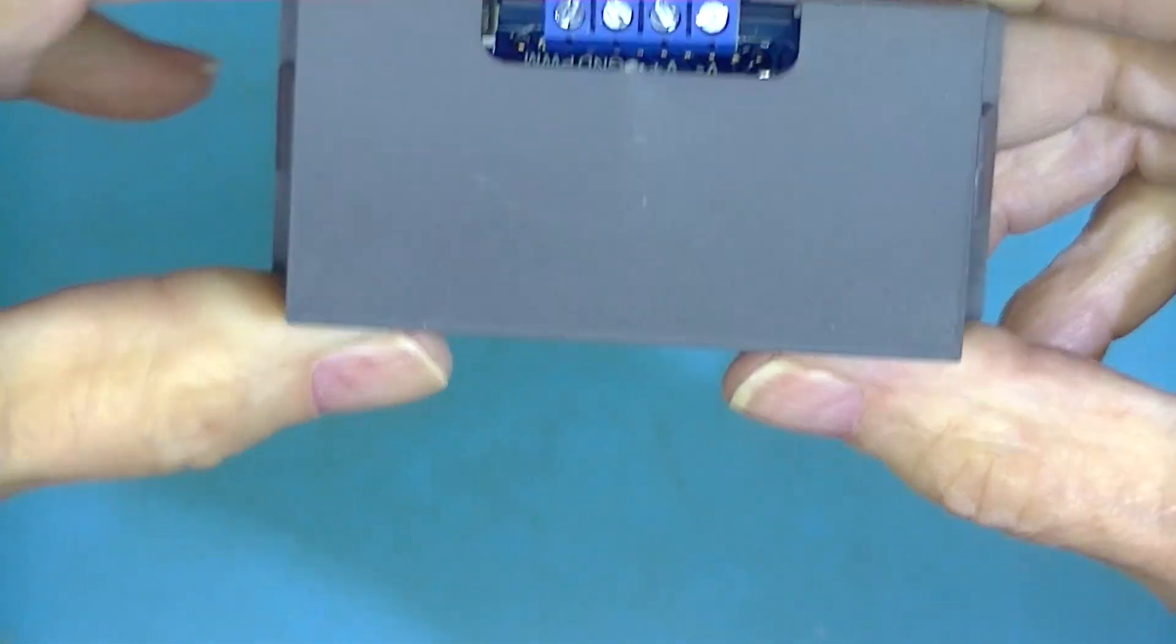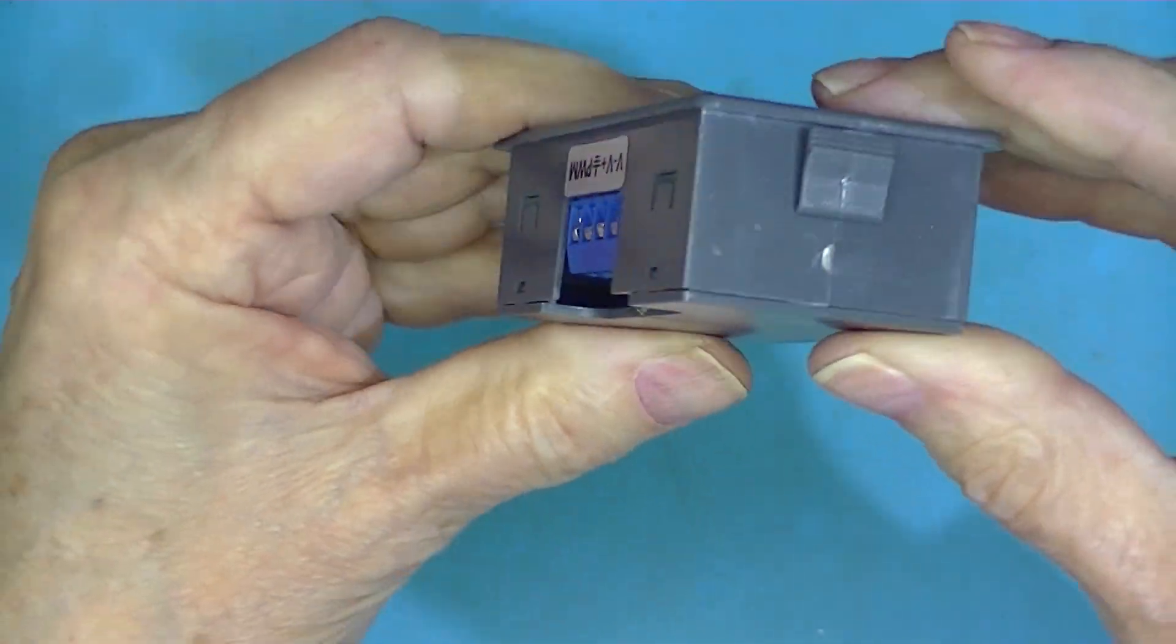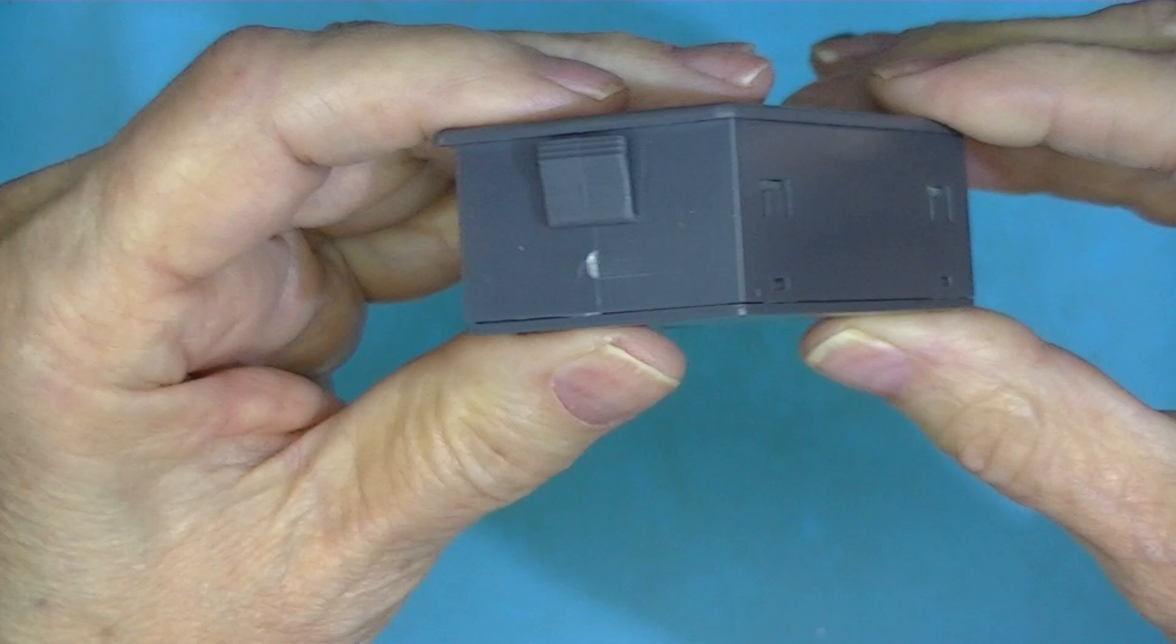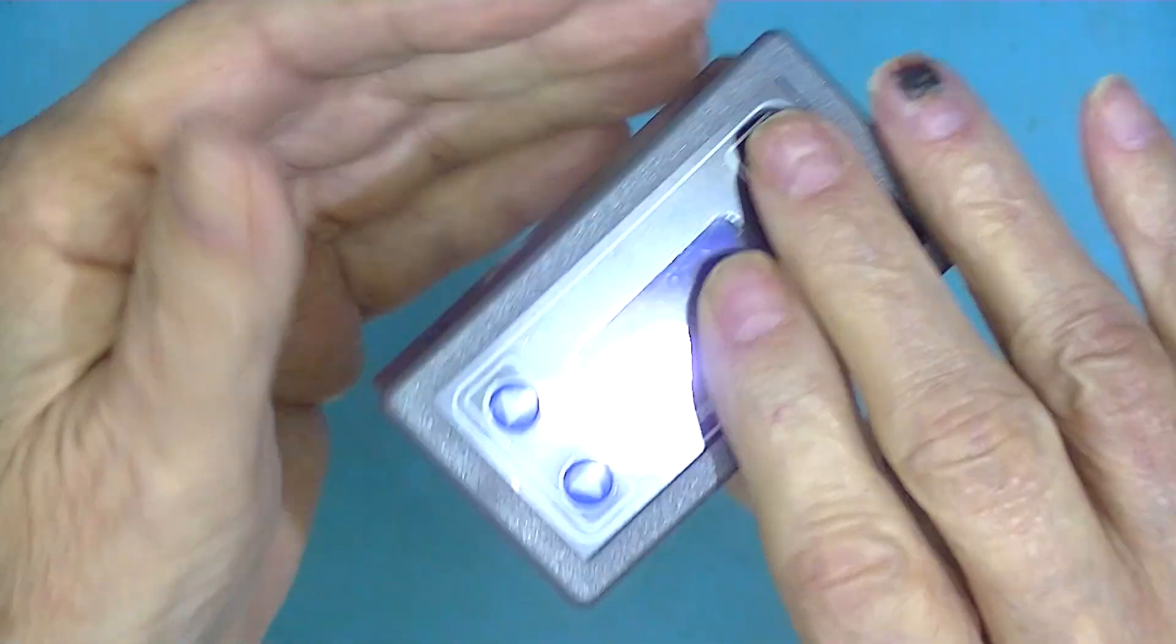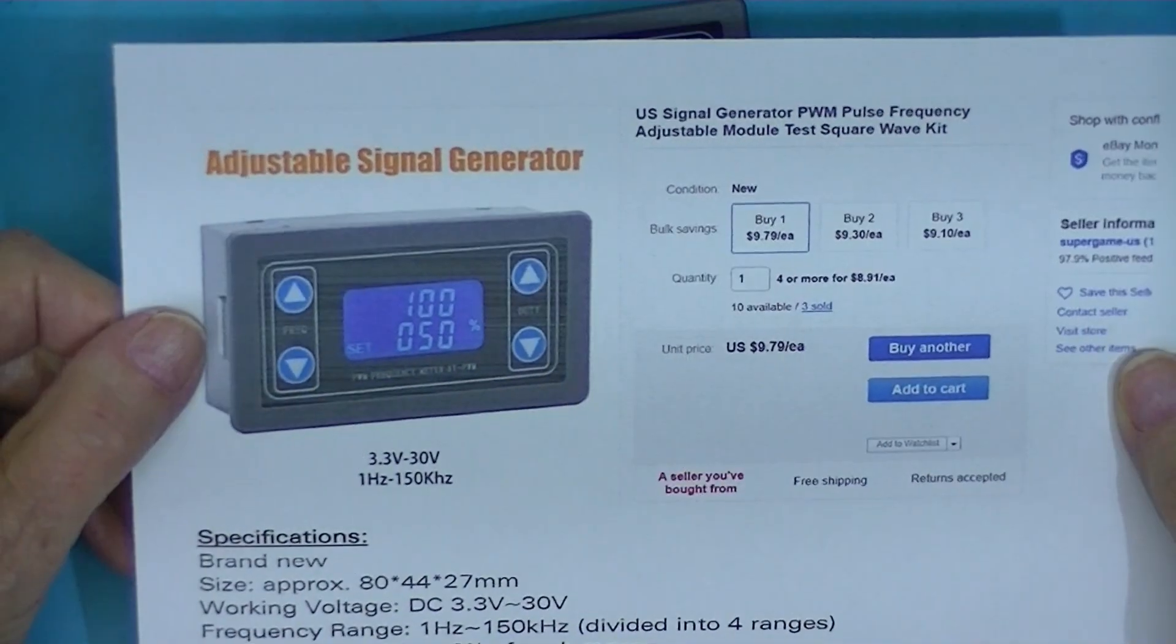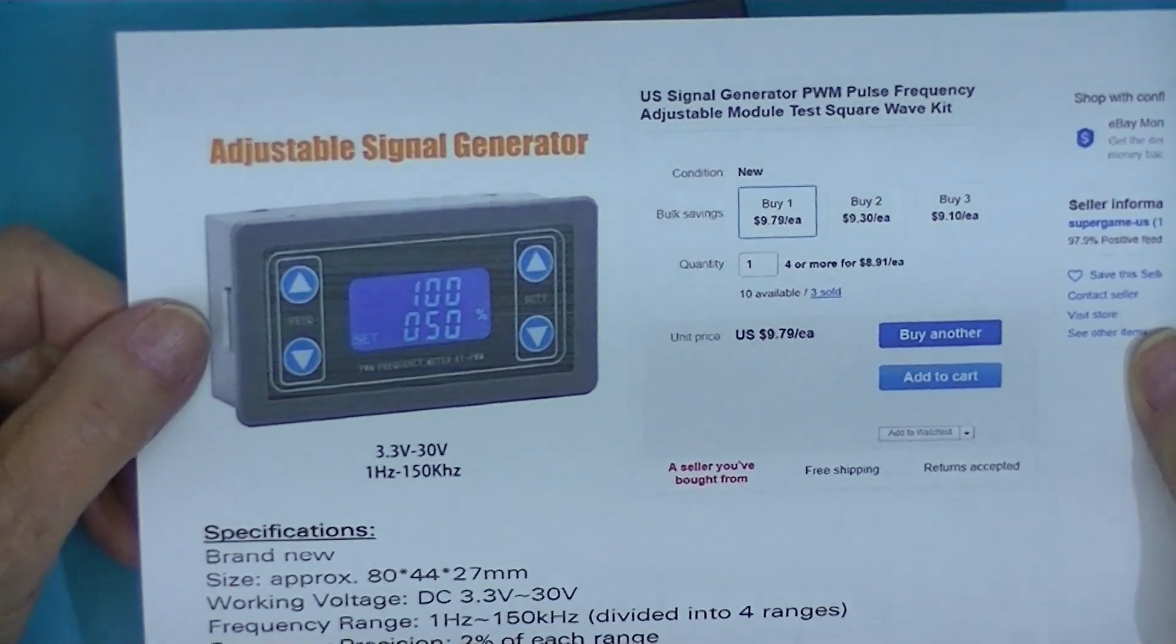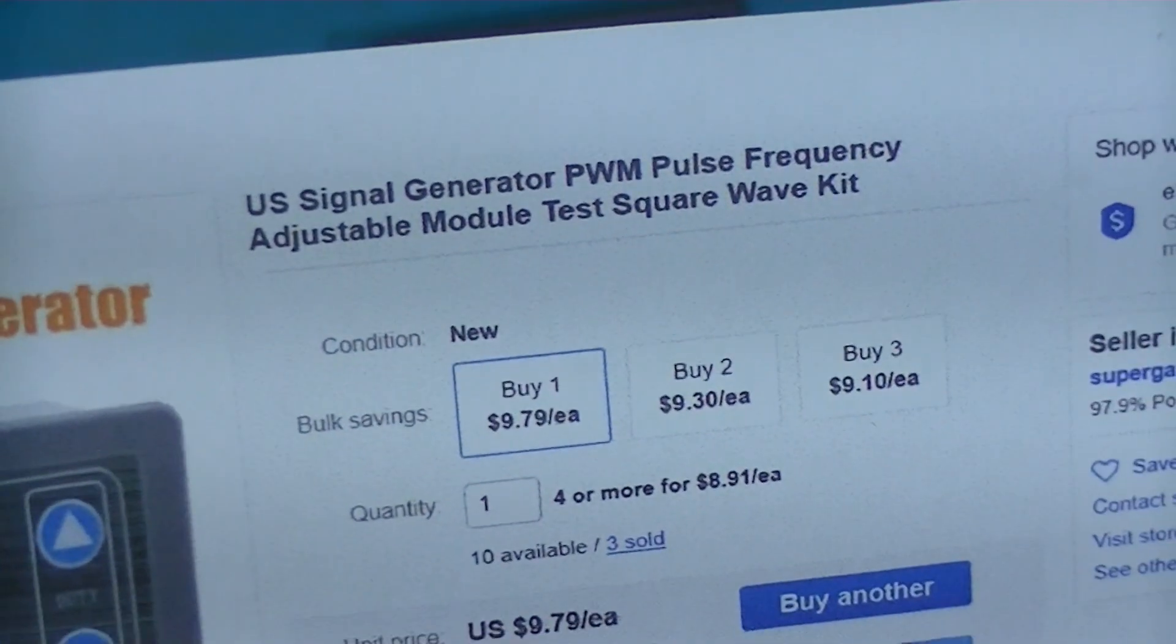It's in one of these little standard packages that they put power supplies and signal generators, dummy loads. This is the seller's page. Signal generator, pulse width.